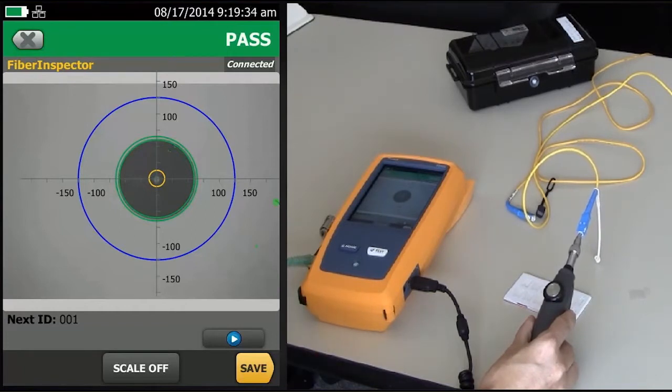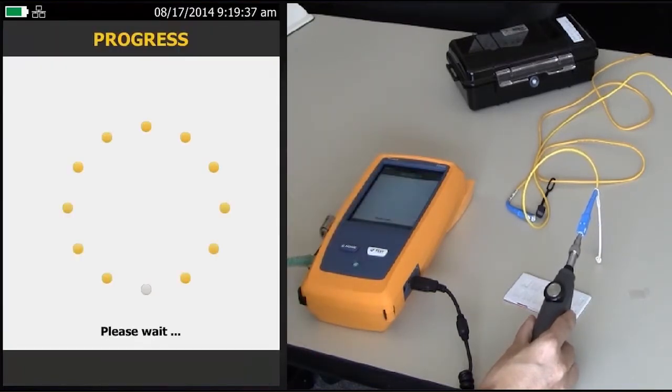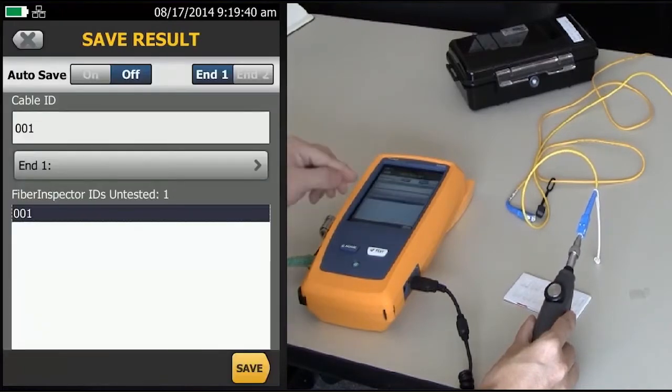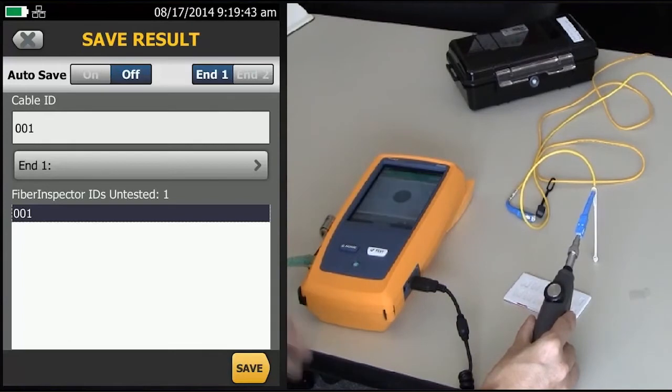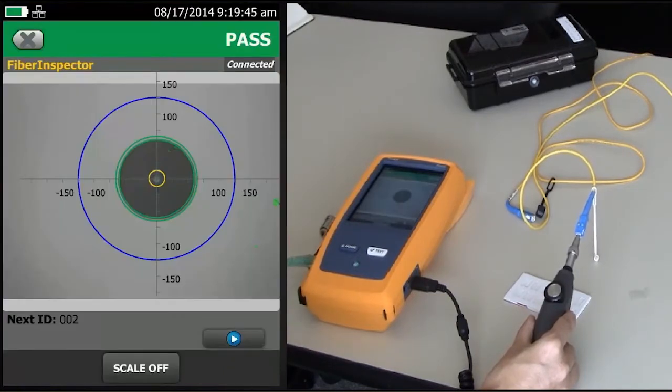And as always, you have the option of saving the end face and save whatever cable data you want to. And if you save that as the same as your optical loss test on the CertiFiber Pro, or your OTDR test on the OptiFiber Pro, it will merge that result automatically. So then when you look in LinkWare, you'll see the end face as well as your Tier 1 or Tier 2 test.